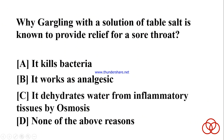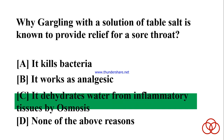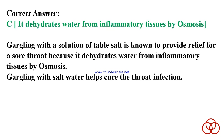Why is gargling with a solution of table salt known to provide relief for a sore throat? A) It kills bacteria. B) It works as an analgesic. C) It dehydrates water from inflammatory tissues by osmosis. D) None of the above. Correct answer: C. It dehydrates water from inflammatory tissues by osmosis.